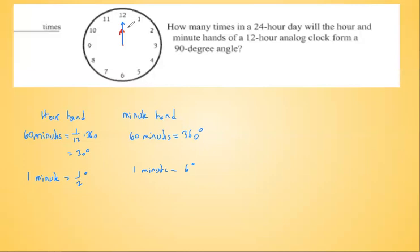We're going to find when the angle between the hour hand and minute hand is first 90 degrees. The minute hand moves faster. Starting from 12, it should be passing 3 a bit, since every hour section is 30 degrees and three sections is 90 degrees — but the hour hand is also moving, so the minute hand needs to pass 3 a bit more.